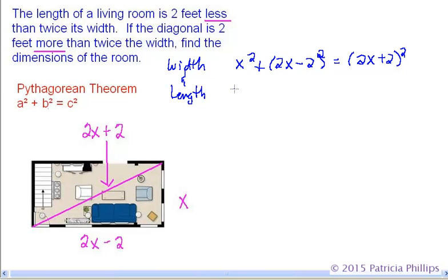So we need the width before we do anything else. So let's isolate our x. We can subtract the second side, the length, basically. We can subtract the length from the hypotenuse to try to get the value of x. So x squared equals 2x plus 2 squared minus 2x minus 2 squared.